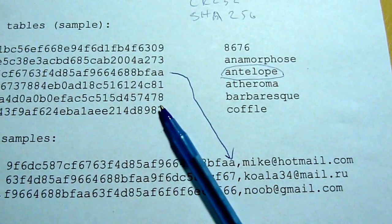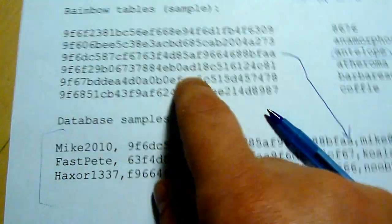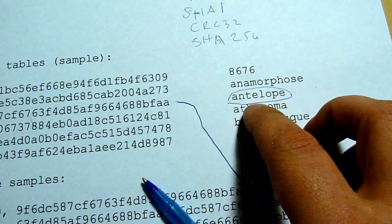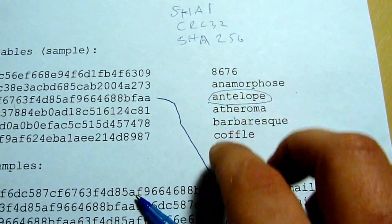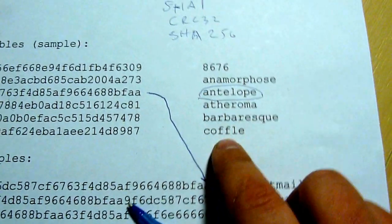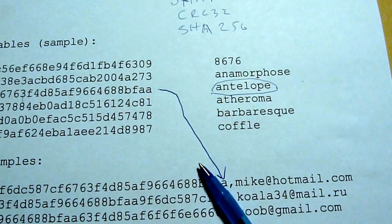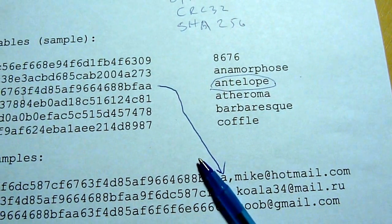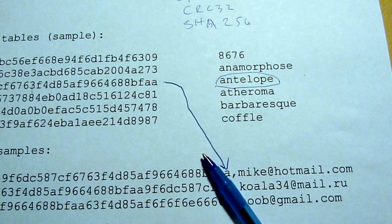So anyways, the gist of it, don't use the same password on multiple websites because if one of them gets hacked and happens to use MD5 and they use a simple password, it will be found in a rainbow table, and it will be used to log in everywhere else that you're registered on, and it'll have really bad consequences for you. So that's it for today. Thank you.